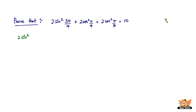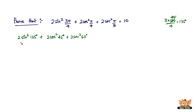3π/4 = 3 × 180°/4 = 135°, π/4 = 45°, and π/3 = 60°. So the expression becomes 2sin²(135°) + 2cos²(45°) + 2sec²(60°). We can write 135° as 90° + 45°.